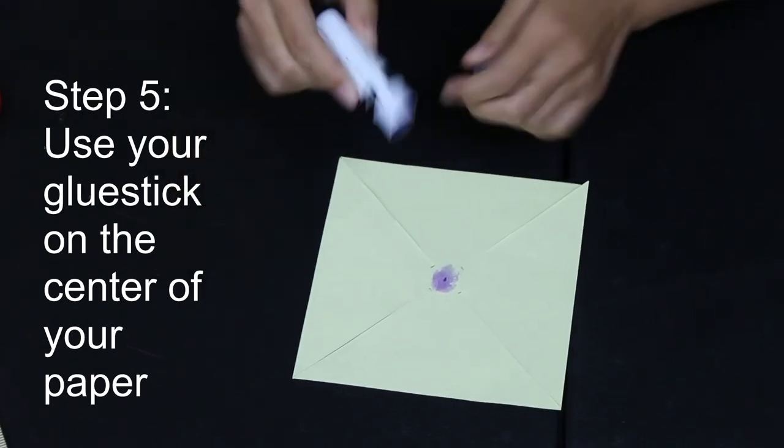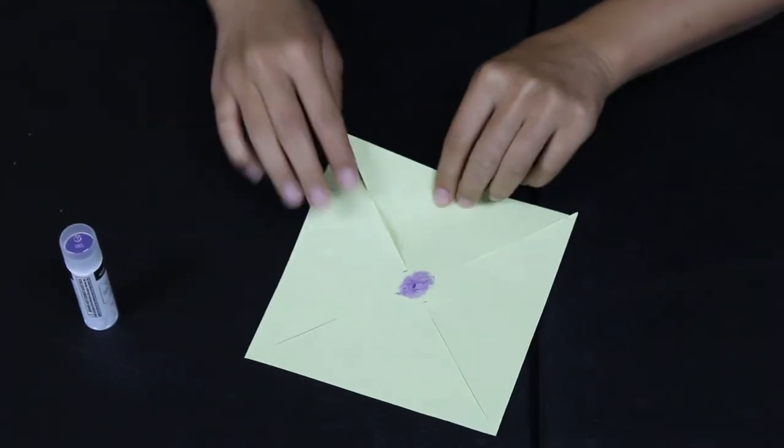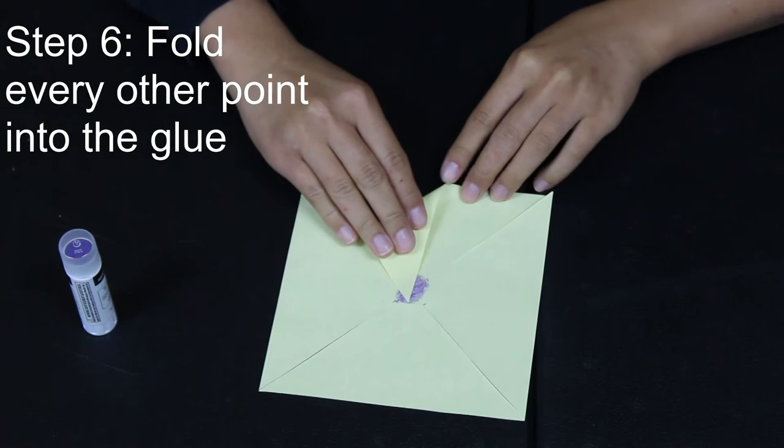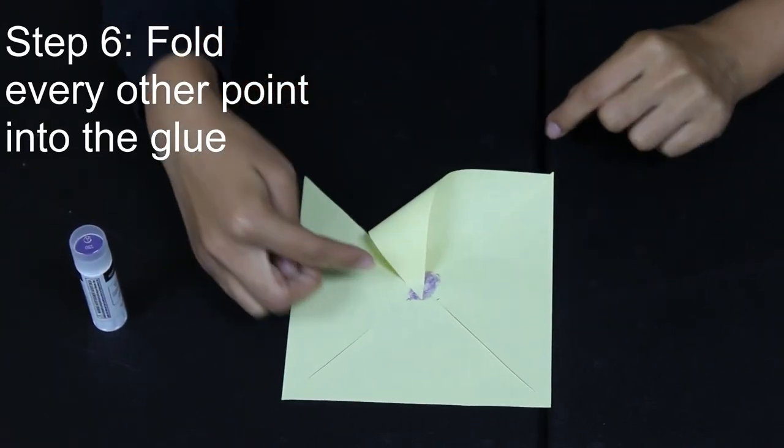We're going to take one of the little floppy edges and fold it toward the center of the paper. Make sure you press it down really hard. The thing to remember is not to press the paper all the way down, just the tip.